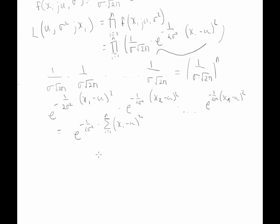So we finally have 1 over sigma square root 2 pi to the power n times e to the minus 1 over 2 sigma squared times the sum of xi minus mu squared. So this is L equals this.